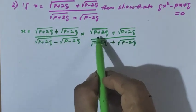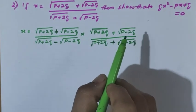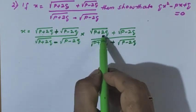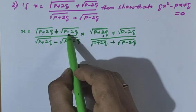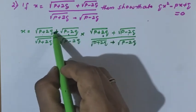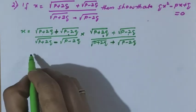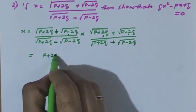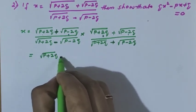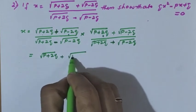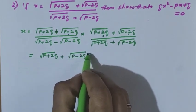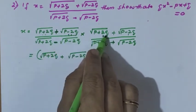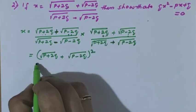What is the numerator? Don't confuse after seeing the root. You can see p plus 2q and p minus 2q both connected with the plus sign. That means in the numerator it is root of p plus 2q plus root of p minus 2q, whole squared — that is a plus b whole squared.